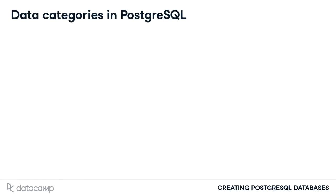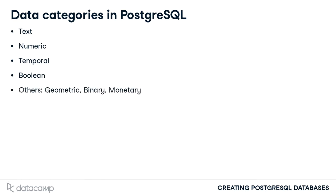There are a number of different data categories available in PostgreSQL. These include text data for storing items such as names and product descriptions, numeric data for storing items such as order size or physical measurements, temporal data for storing items such as delivery dates or timestamps, and Boolean data for storing items that have true-false values. There are other data categories as well, but we will be focusing on the types described above.